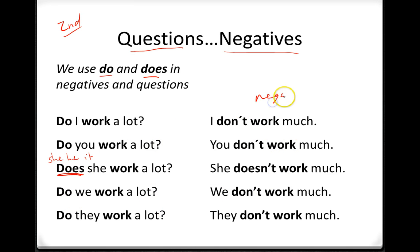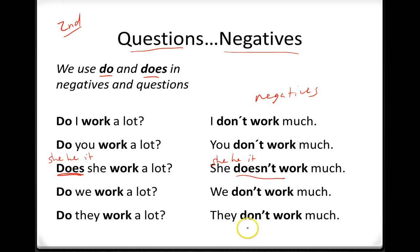Now, these are negatives. We use 'don't' and 'doesn't.' I don't work much. You don't work much. She doesn't work much — it's different because it's she, he, it. We don't work much. They don't work much. Do they work a lot? They don't work much. Do we work a lot? We don't work much. Does she work a lot? She doesn't work a lot. So you can say 'a lot' or 'much.'